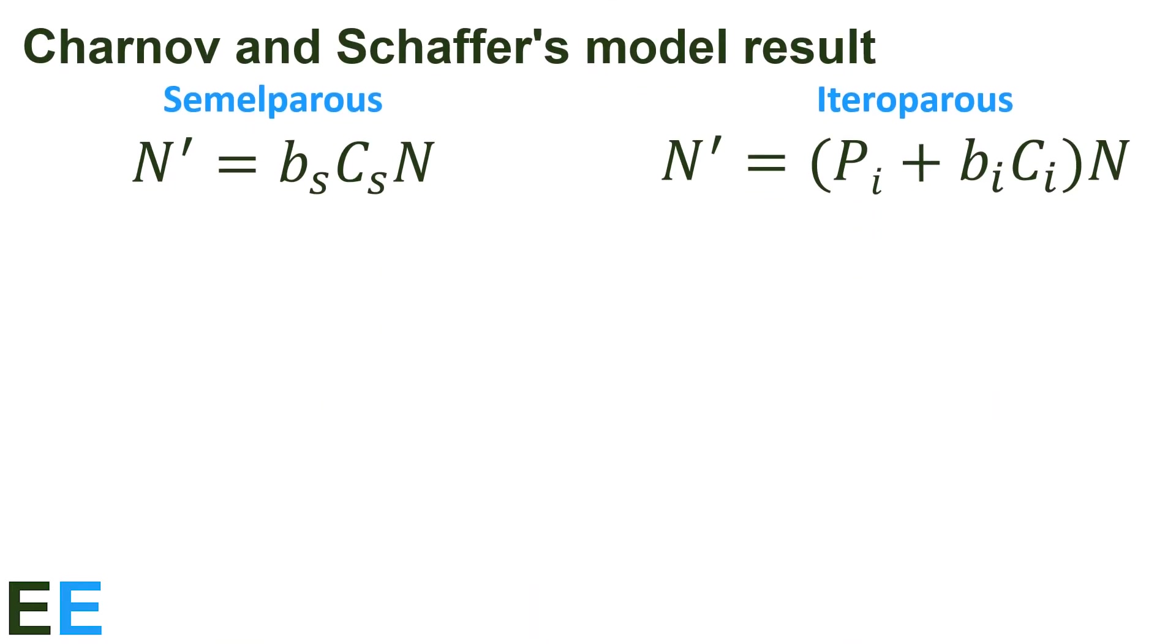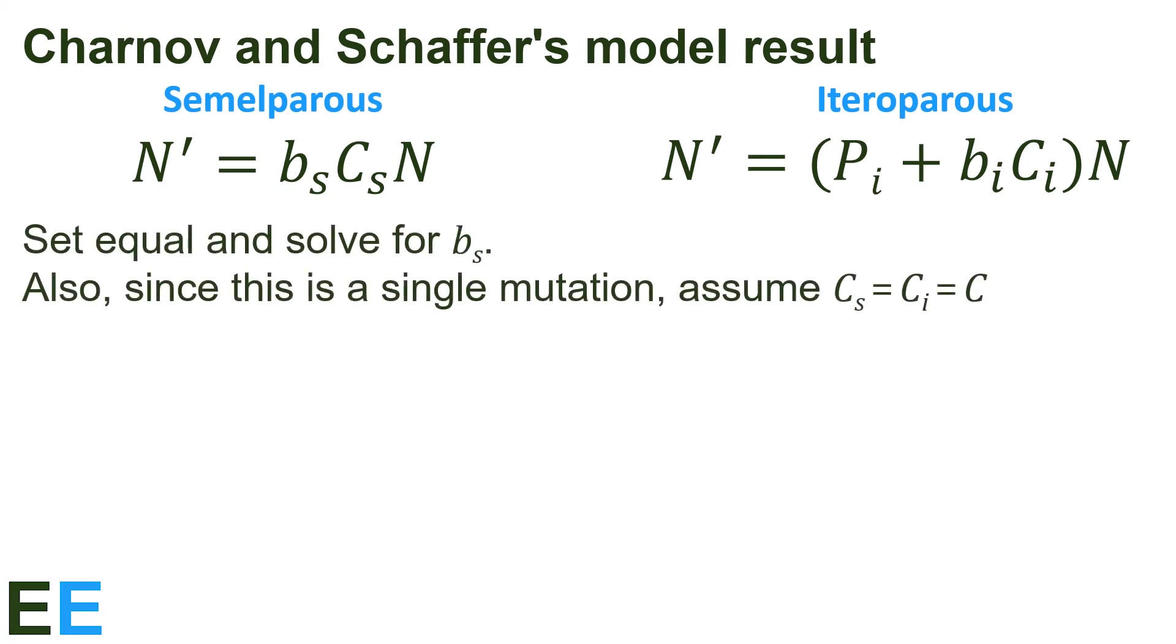Now for the result of Charnov and Schaffer's improved version of Cole's model. The new equations for the semelparous and iteroparous strategies are shown here. Now we set them equal to each other and solve for the minimum B sub S value that would allow the semelparous strategy to equal or exceed the fitness of the iteroparous strategy. Remember that we're replacing C sub S and C sub I with C. This gives us B sub S times C times N equals, in parentheses, P sub I plus B sub I times C, end parentheses, times N.